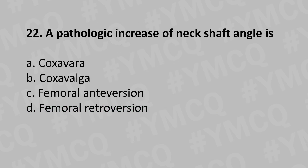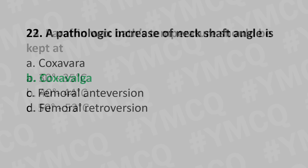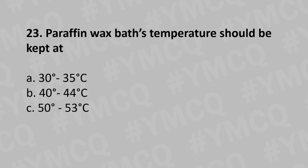Moving to our 22nd question: pathological increase of the neck shaft angle is: Option A: Coxa vara, Option B: Coxa valga, Option C: Femoral anteversion, Option D: Femoral retroversion. And the answer is Option B: Coxa valga.